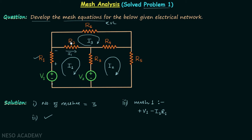Moving forward we have resistor R2. Current I1 is flowing in this direction but current I3 is also flowing in the opposite direction. Remember: when developing the KVL equation for a mesh, the current of that mesh is taken to be the largest. So out of I1, I2, and I3, I1 is the largest here. The net current through R2 is I1 minus I3, giving minus (I1 - I3)·R2.